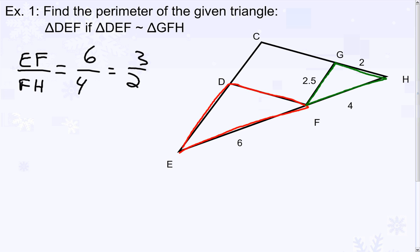That means the perimeter of triangle DEF will have the exact same ratio as the scale factor with the perimeter of triangle GFH. We do not know the perimeter of triangle DEF.